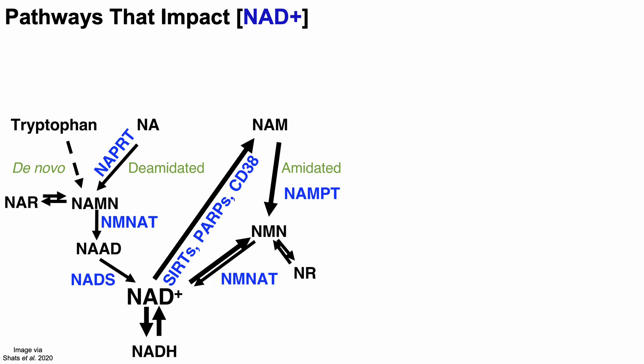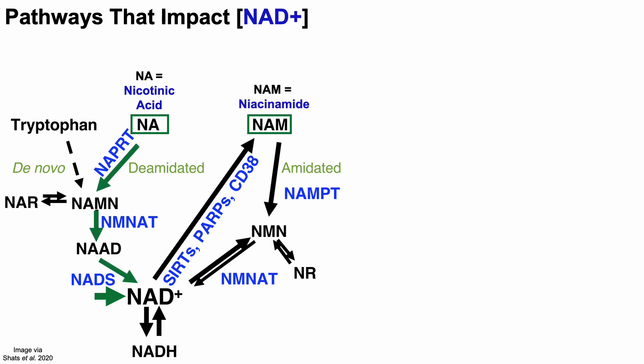We'll look at pathways that impact the concentration of NAD. At the top we have NA and NAM: NA is nicotinic acid, converted by three enzymatic steps into NAD. Similarly, NAM is niacinamide, converted first into NMN — the popular dietary supplement — and then NMN is converted into NAD. So two enzymatic steps from niacinamide to NAD. Both nicotinic acid and niacinamide are found in the dietary vitamin B3, niacin.